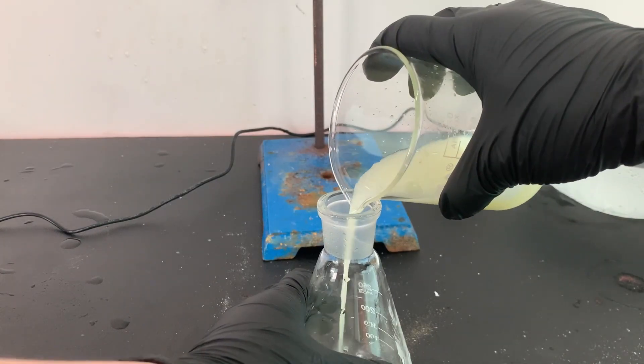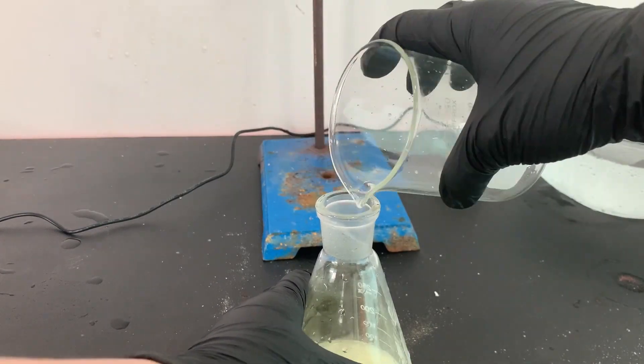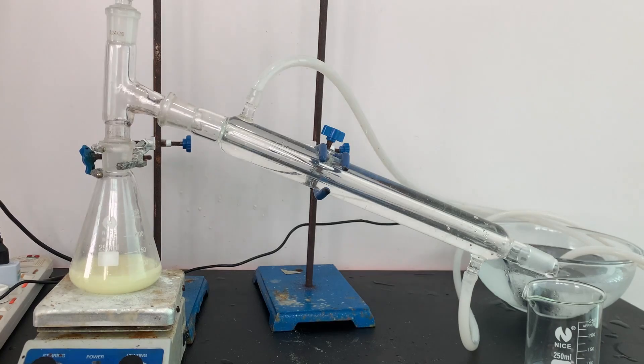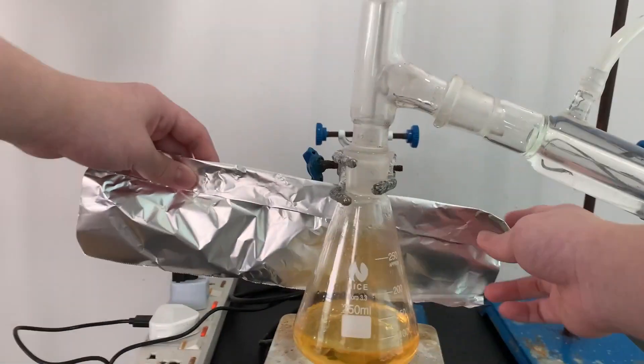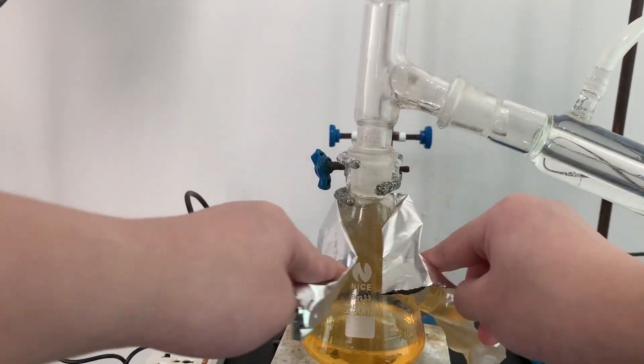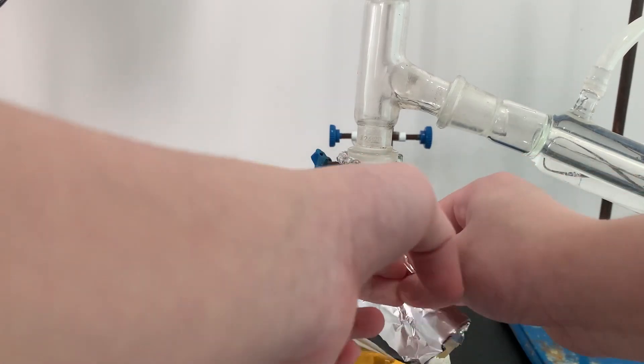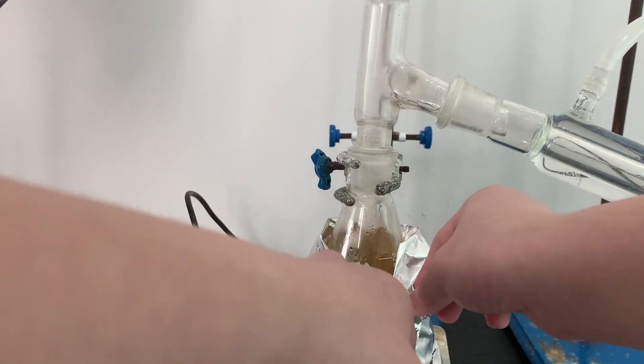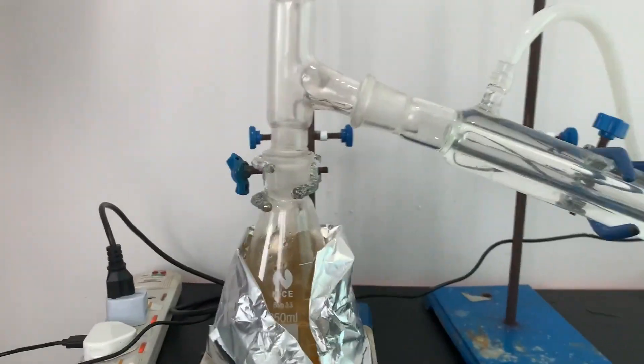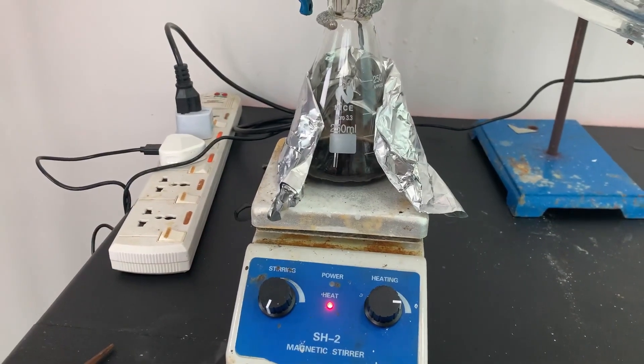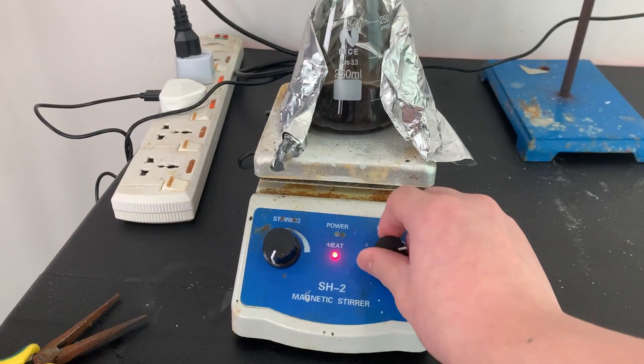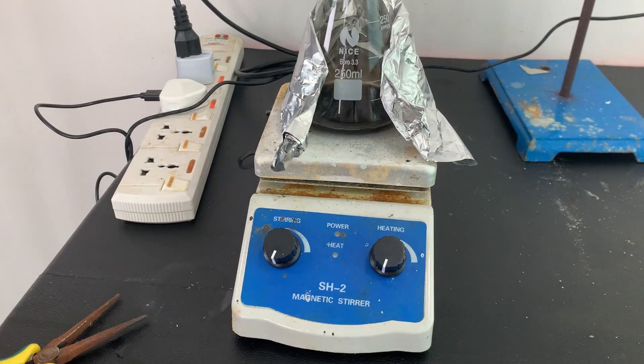The washed nitrobenzene was then poured into a jointed flask and set up for a simple distillation. The jointed flask was wrapped in aluminum foil to help insulate the heat and increase the rate of distillation. Once there was a small amount of liquid in the jointed flask, the heat was turned off.